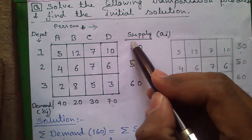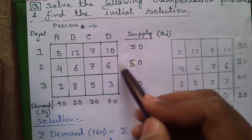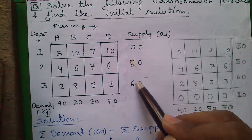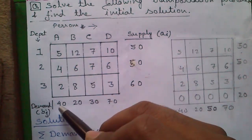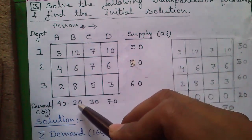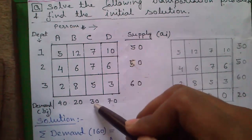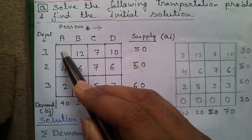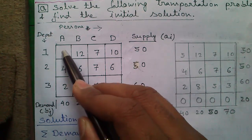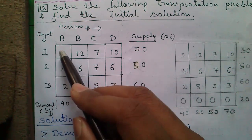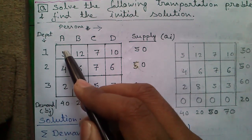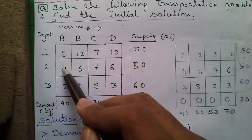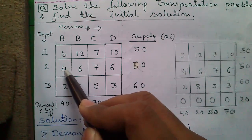We have 50 units of goods in stock in depot 1, 50 units in depot 2, and 60 units in depot 3. Person a's demand is 40 units, b's demand is 20 units, c's demand is 30, and d's demand is 70. The cell values represent the allocation cost, or cost of transportation per unit of goods. For example, transporting 1 unit from depot 2 to customer a costs 4 units.